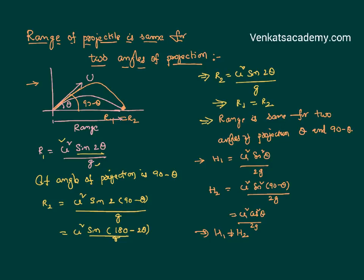For what angles is the range going to be the same? For theta and 90 minus theta. That means for 30 degrees and 90 minus 30 = 60 degrees, for 20 degrees and 70 degrees, for 35 degrees and 90 minus 35 = 55 degrees. For any two complementary angles, the ranges are always going to be the same. That is what we have proved: range is the same for two angles of projection theta and 90 minus theta.